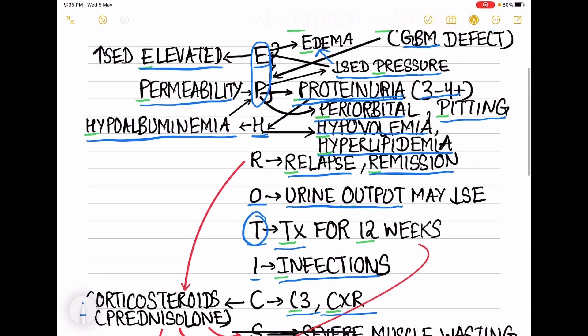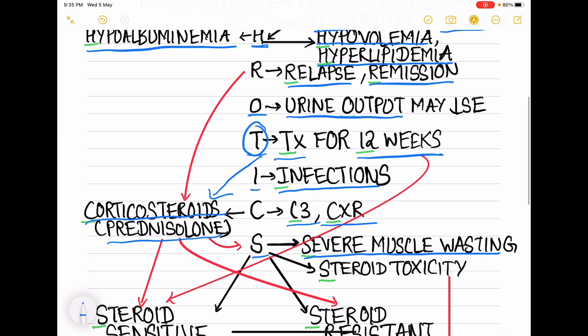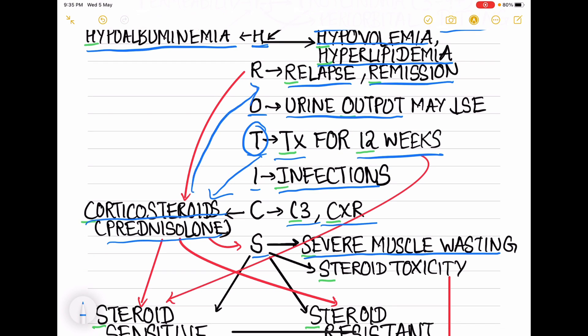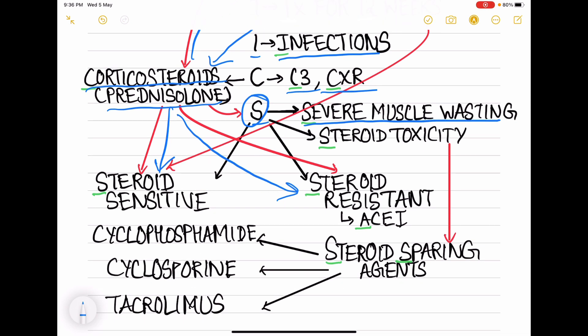Now coming to the treatment. T for treatment, and treatment is done for 12 weeks - T for 12 weeks - with the help of corticosteroids, that is prednisolone. This corticosteroid is used for the treatment of relapse, also used for the treatment of steroid-sensitive nephrotic syndrome and steroid-resistant nephrotic syndrome.